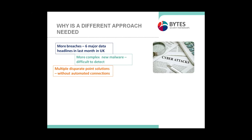Companies are also working with multiple different point solutions, many of which don't have automated connections. So it can be quite simple for malware to move within the organization and spread without being necessarily picked up because systems aren't talking to each other. As a security community, we're just much busier than we were five or six years ago — increasing data, managing data in the cloud, very different solutions, and the sheer volume of data and logs being generated makes it difficult to detect when malware is spreading.